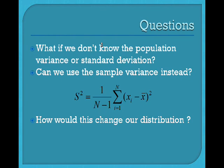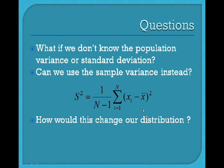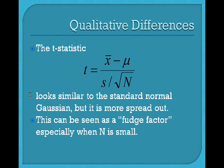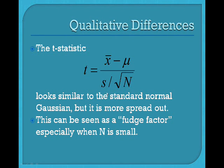One thing that we can do instead is use the sample variance, which we have computed here. We basically compare our particular data points from the sample average, since we don't know the true average of the population. We perform this and then we divide by N minus 1 — there are other reasons behind why it's N minus 1 and not N, but those are beyond the scope of this topic. We use the sample standard deviation to try and get an idea of the variance of our data. So, can we use this directly into our z-test, or how is this going to change our distribution? What we introduce now is the notion of the t-statistic, where basically everything is the same, except instead of the known standard deviation sigma, we just use our sample standard deviation s, with s being the square root of s squared.